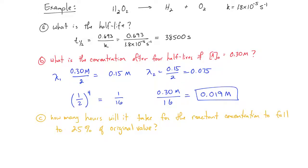And finally, we can answer the question: how many hours will it take for the reacting concentration to fall to 25% of its original value? To answer this question, we have to keep in mind that 50% would indicate one half-life, and 25% is what would be left after two half-lives. And so we need to calculate for two half-lives.